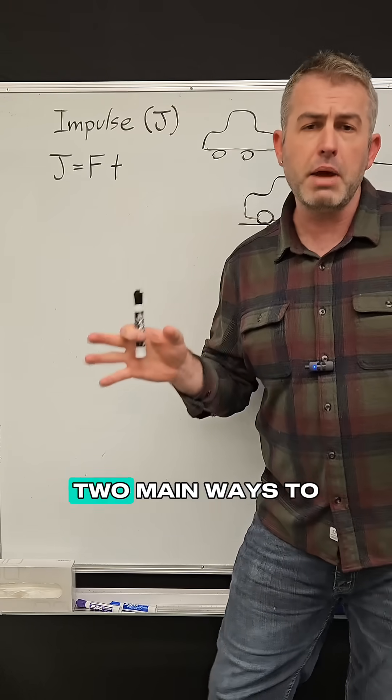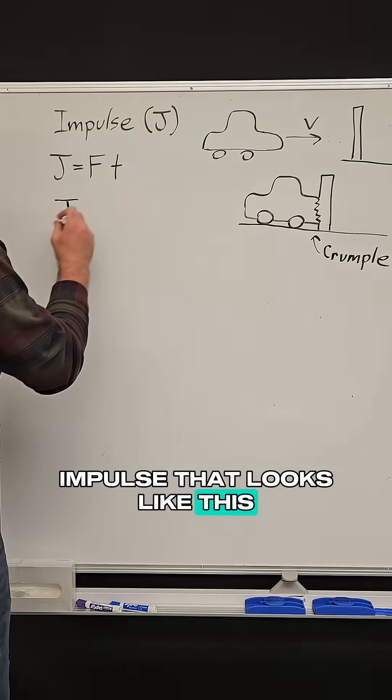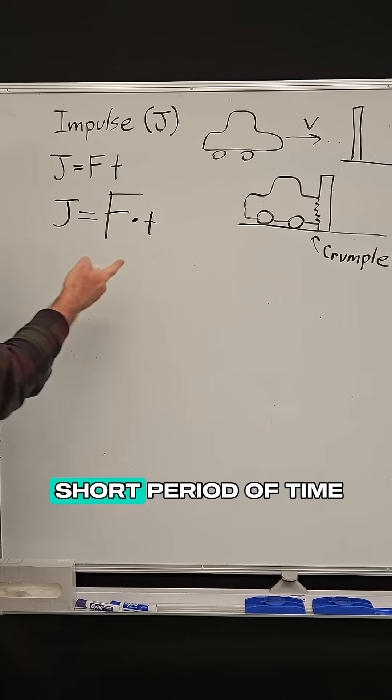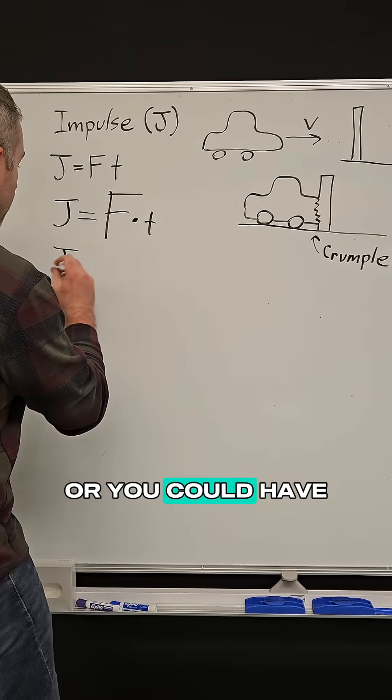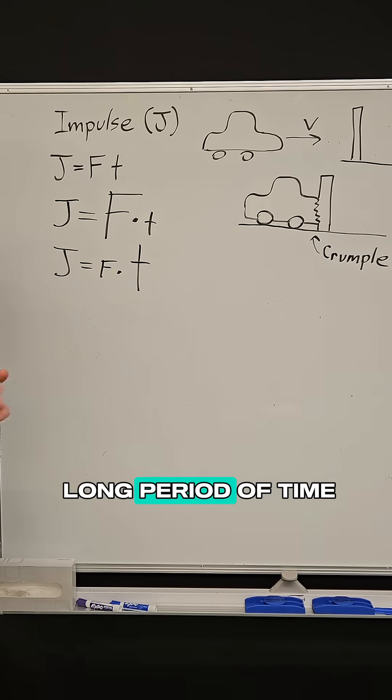So there are really two main ways to apply an impulse to an object. You can have an impulse that looks like this: a really strong force acting for a very short period of time, or you can have an impulse that's a very small force acting over a very long period of time.